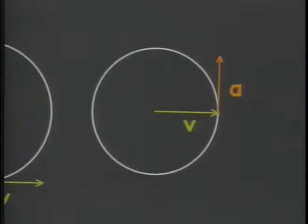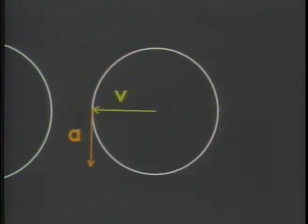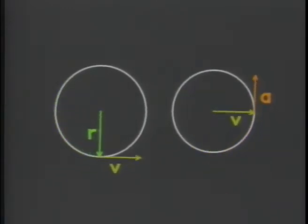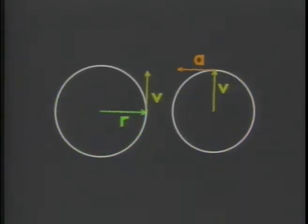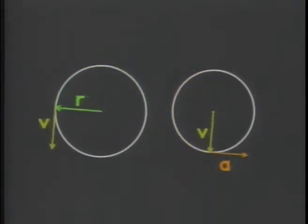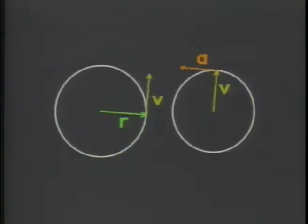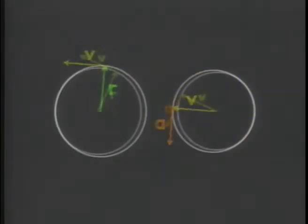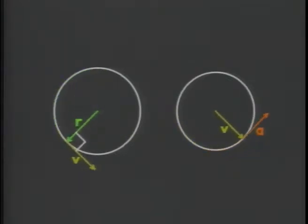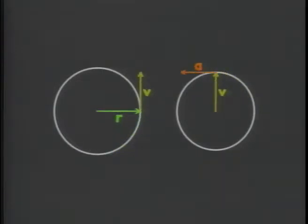As a body undergoes uniform circular motion, the acceleration continually redirects the velocity vector, which continually redirects the radius vector. They all keep in step with each other, constant in magnitude, but changing continually in direction. In uniform circular motion, the velocity is perpendicular to the radius vector, and the acceleration is perpendicular to the velocity vector.